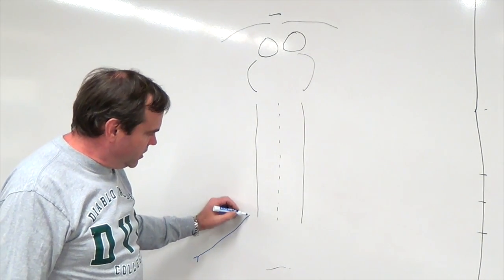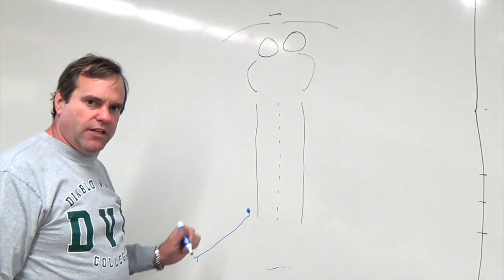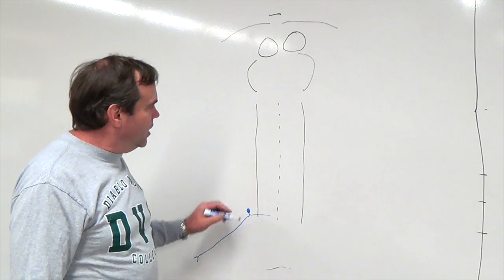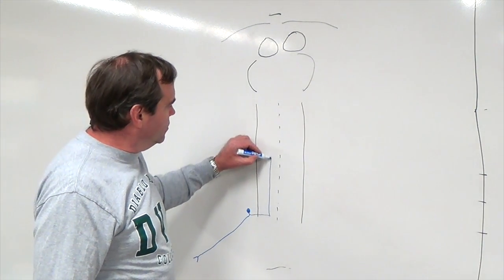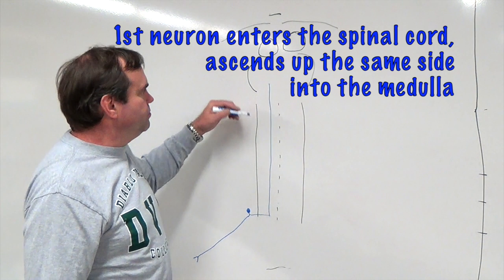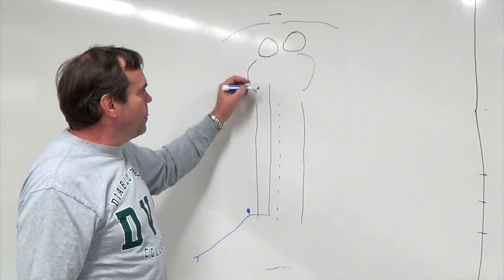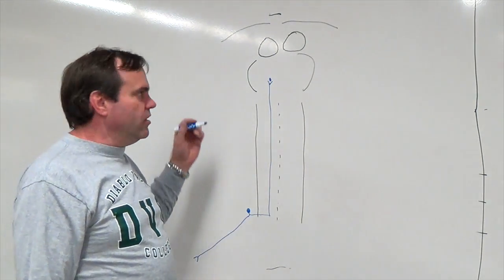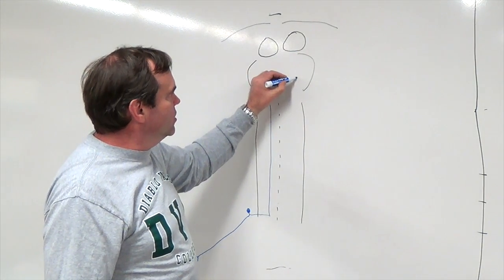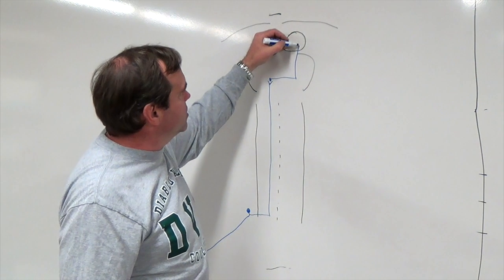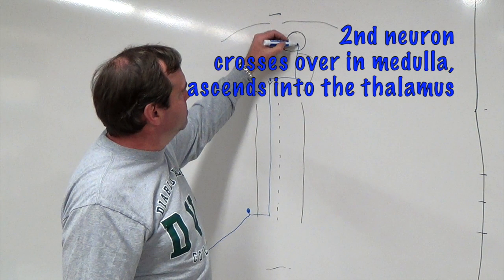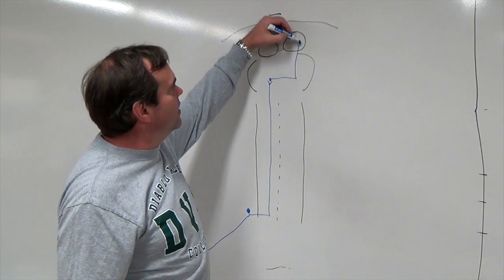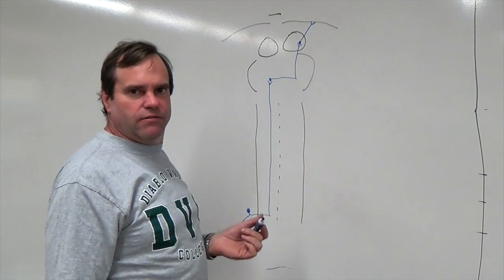Our first neuron is a pseudo-unipolar neuron. Its cell body is in the posterior root ganglion, and its axon enters the spinal cord. It ascends the spinal cord to the medulla. In the medulla, it synapses on the second neuron, and the second neuron is the one that crosses over. It crosses over and then projects to the thalamus, where it synapses, and that third neuron projects to the cerebral cortex, where it synapses.